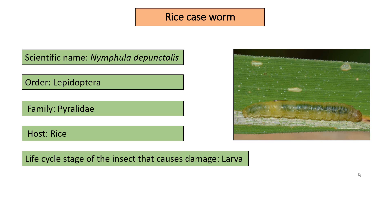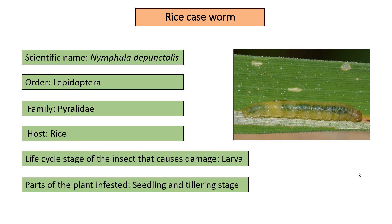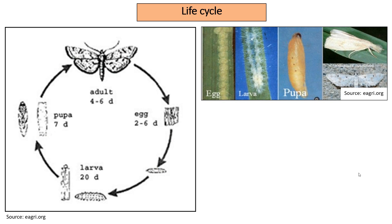The life cycle stage of the insect that causes damage is larva. Parts of the plant infested are seedling and tillering stages. The life cycle of rice case worm has four main stages: egg, larva, pupa, and adult.